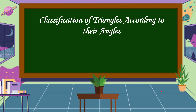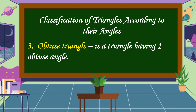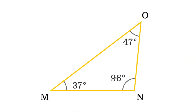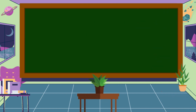The third classification of triangles according to their angles is an obtuse triangle. An obtuse triangle is a triangle having one obtuse angle. This is an example of an obtuse triangle — one angle measures more than 90 degrees and the two other angles are acute angles. I hope that you understand our lesson for today, and thank you for watching.